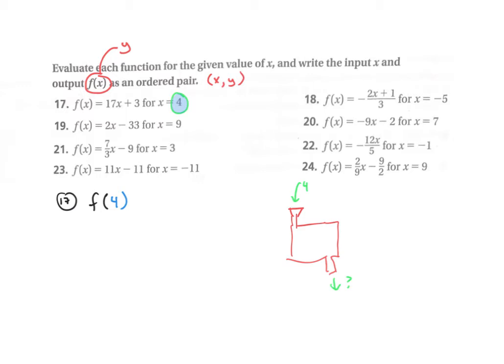It equals 17 times 4 plus 3, and so now we just simplify. 17 times 4 is 68 plus 3, so f(4) is equal to 71.